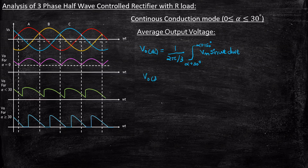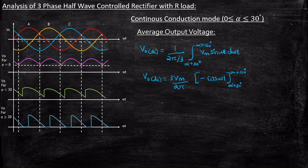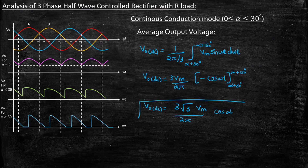We have Vout_DC equal to 3Vm by 2π. Integration of sin is minus cos(ωt), evaluated from alpha plus 30 degrees to alpha plus 150 degrees. Substituting and simplifying this, you will get 3√3·Vm / 2π · cos(α). This is a very important expression for solving numericals.